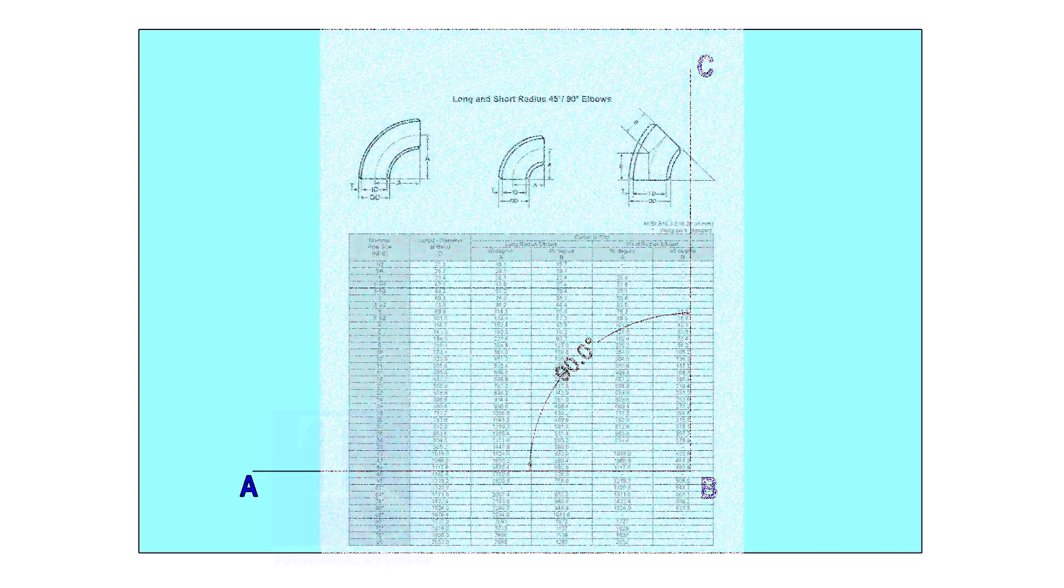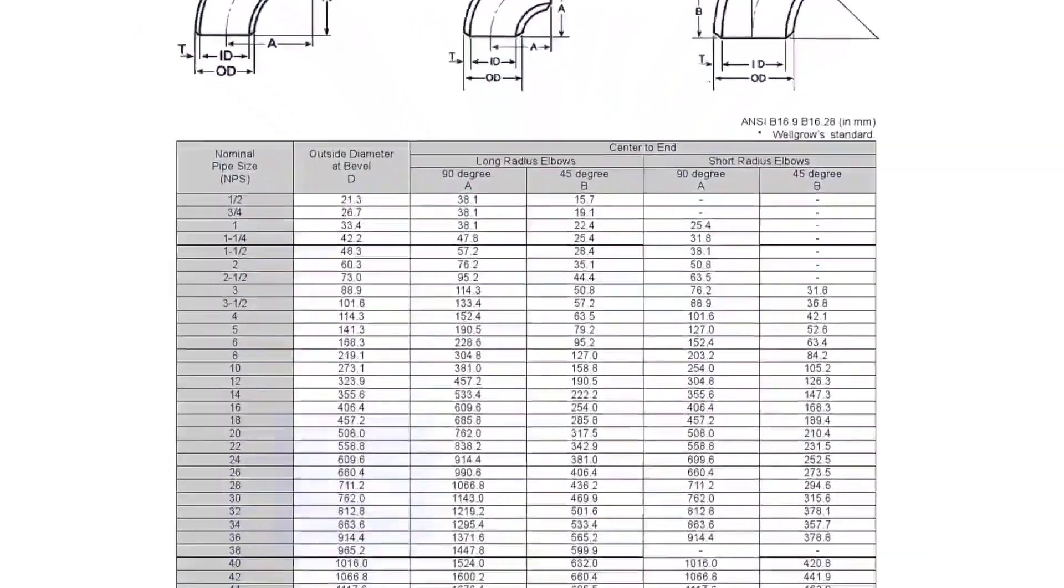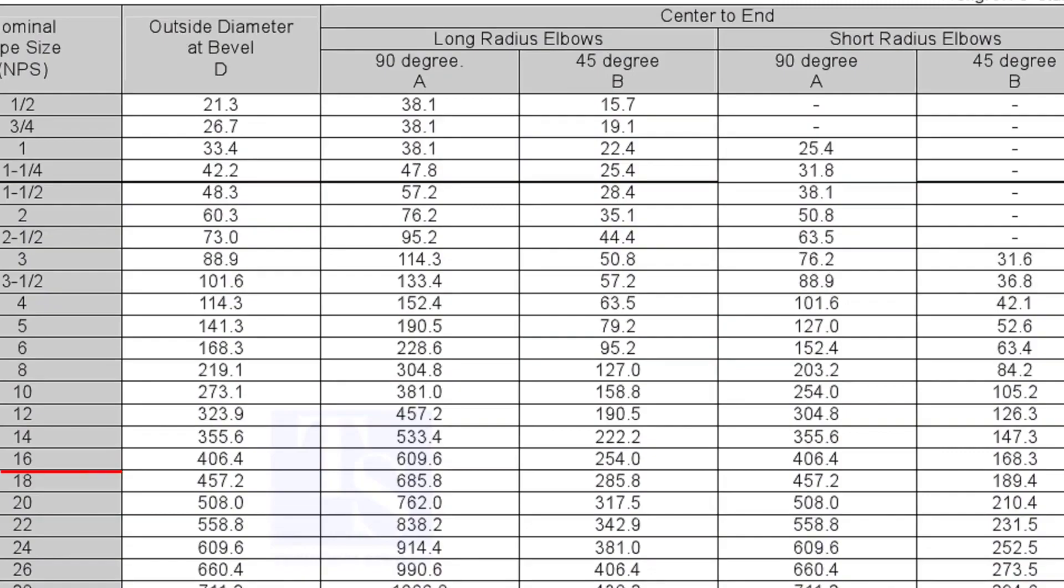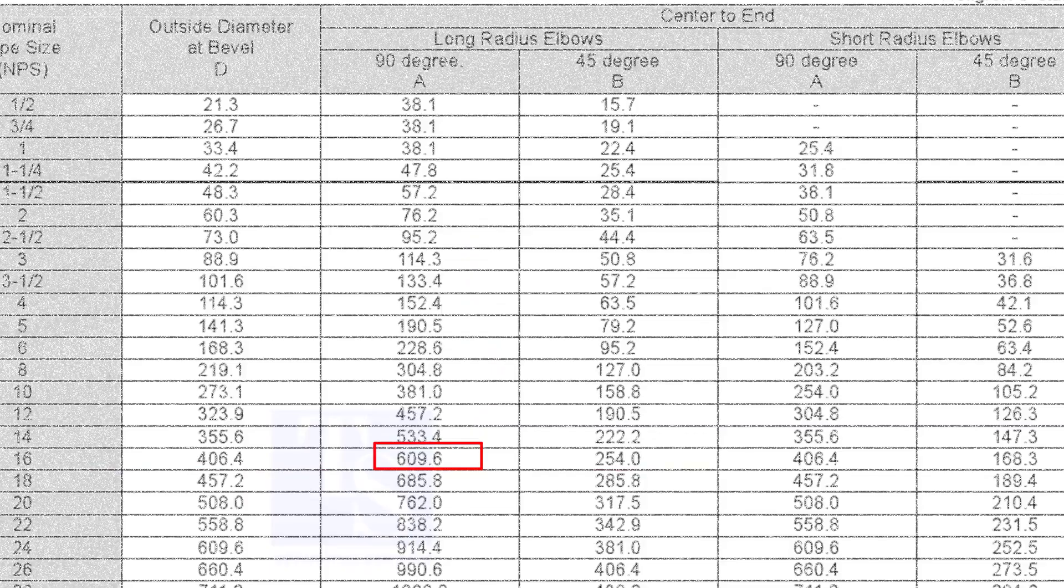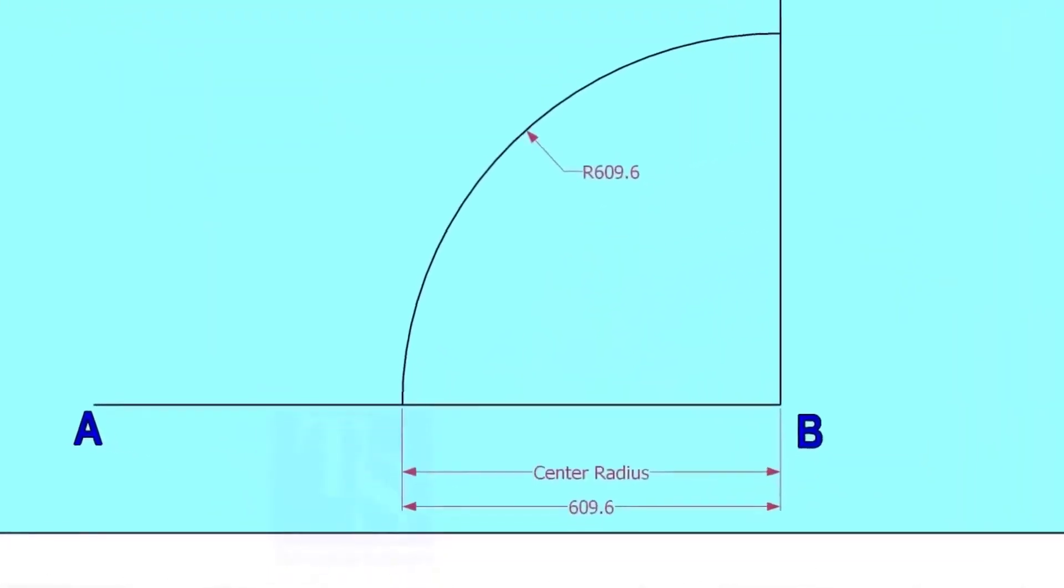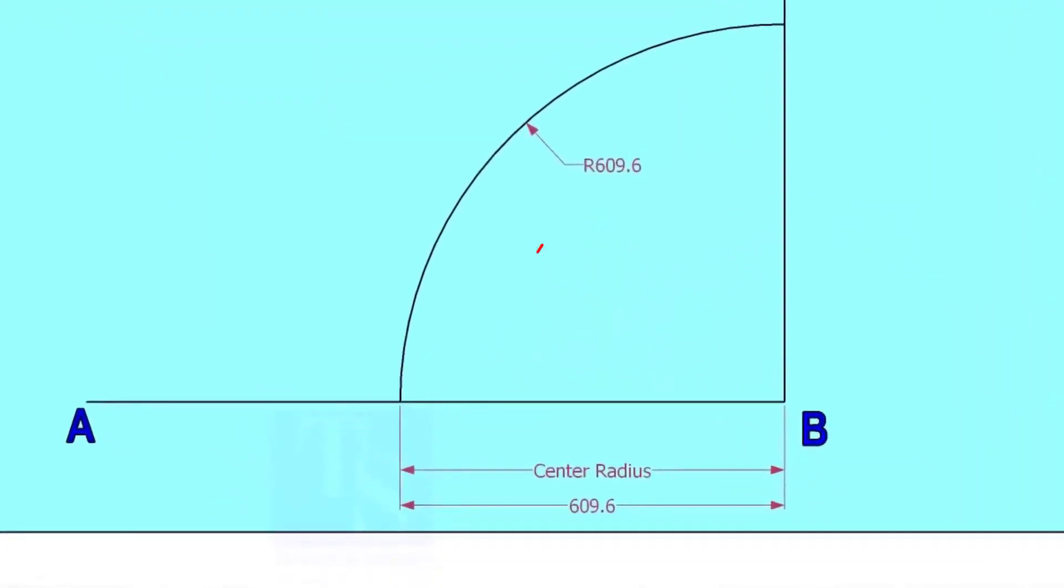Let us mark a 25-degree elbow on a 16-inch large radius elbow. Mark line AB and a perpendicular line BC. Let us check the center radius of 16-inch long radius elbow. Draw an arc with the center radius 609.6 millimeters.